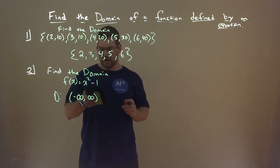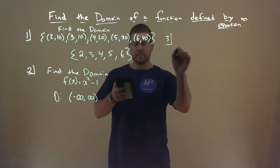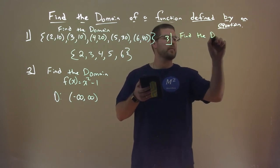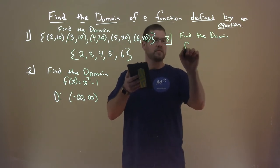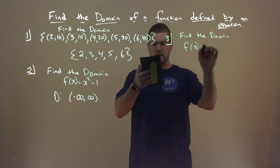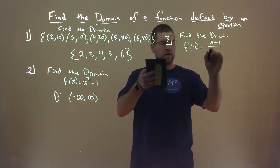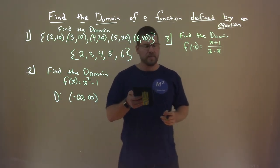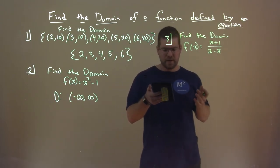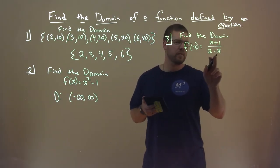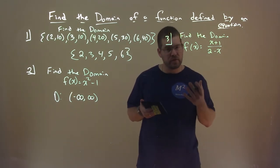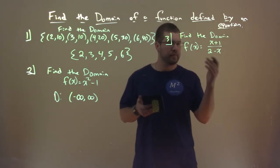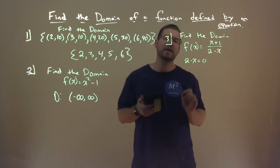Let's go with a trickier one, number three: find the domain of F of X equals X plus 1 over 2 minus X. What really restricts our domain? That denominator — we know we cannot divide by 0. We want to see what X values cause that. So we take the denominator, 2 minus X, and set it equal to 0.